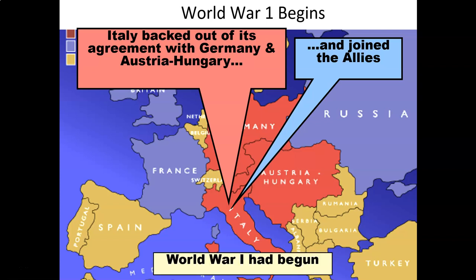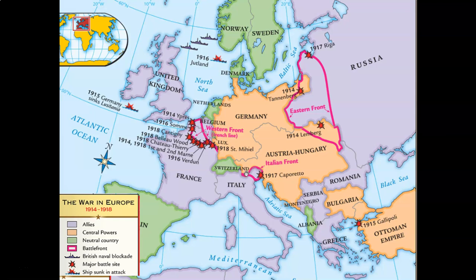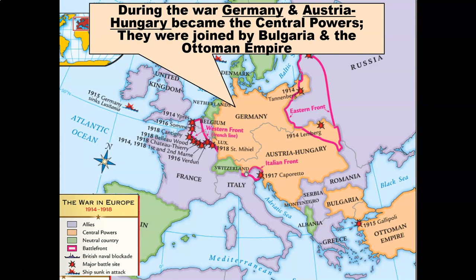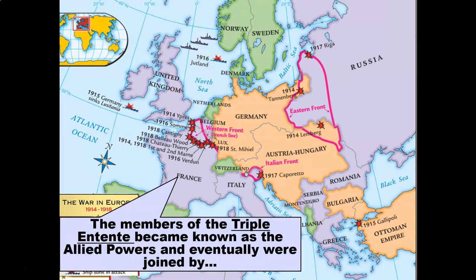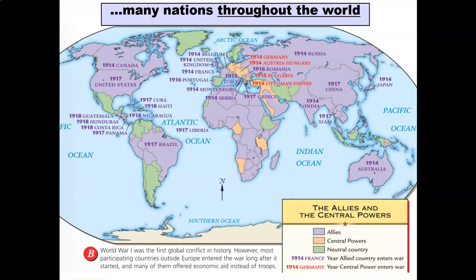Here we have a map of the conflicts that took place in different areas of Europe — major battles especially on the French side and also on the Russian side. During the war, Germany and Austria-Hungary became the Central Powers, joined by Bulgaria and the Ottoman Empire. The members of the Triple Entente became known as the Allied Powers and were eventually joined by many nations throughout the world.